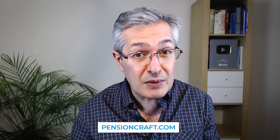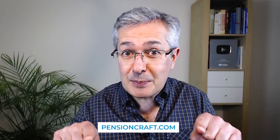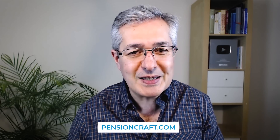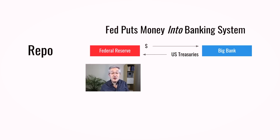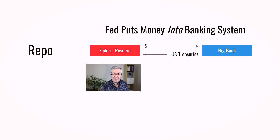Let's begin with the definition of repo and reverse repo, in terms of how the Federal Reserve sees it. A repo is a short-term transaction between a bank and the Federal Reserve where the bank gives some treasuries to the Federal Reserve.